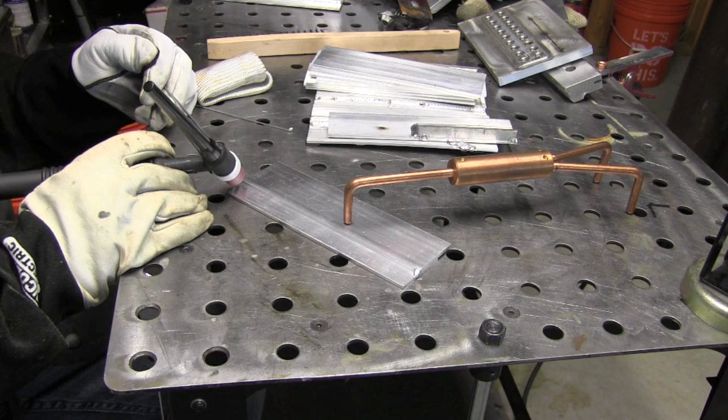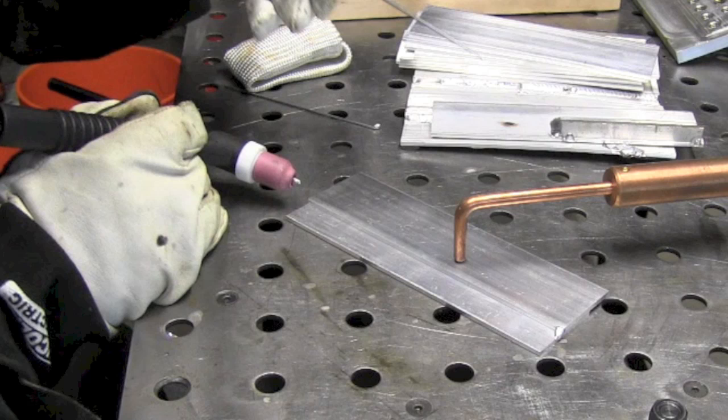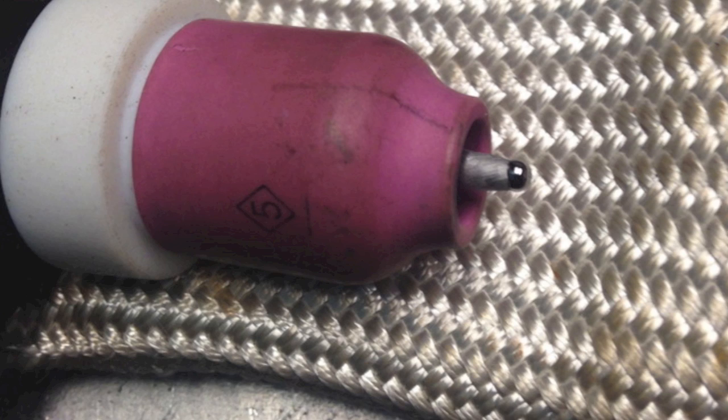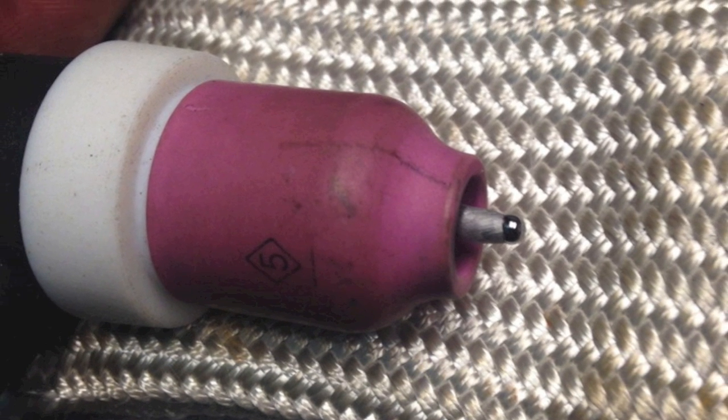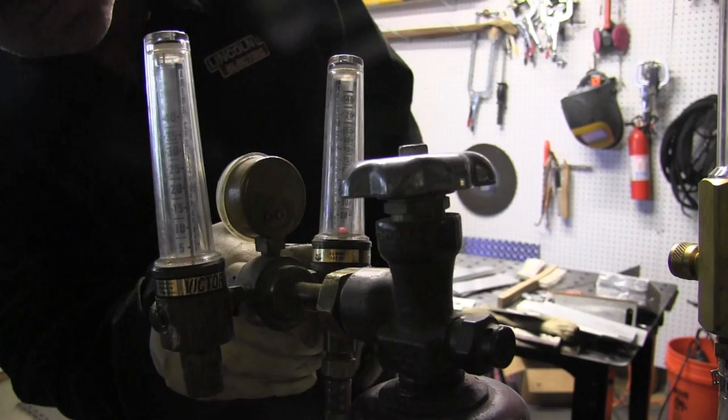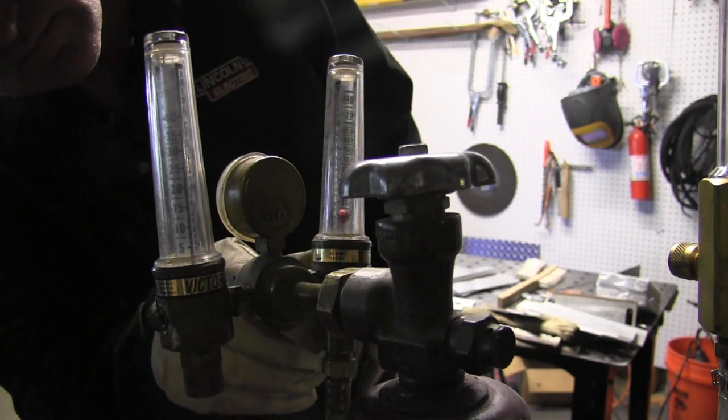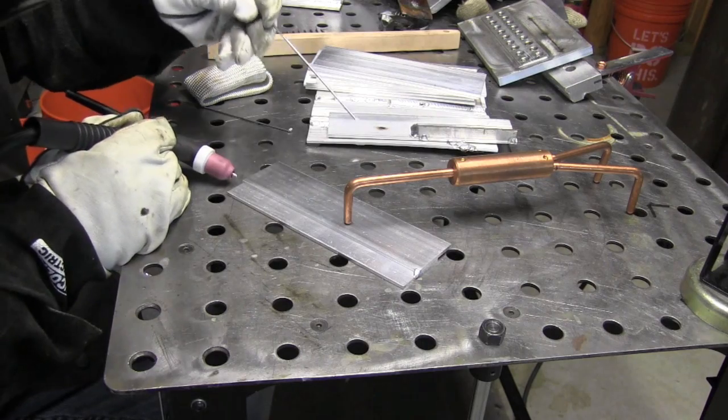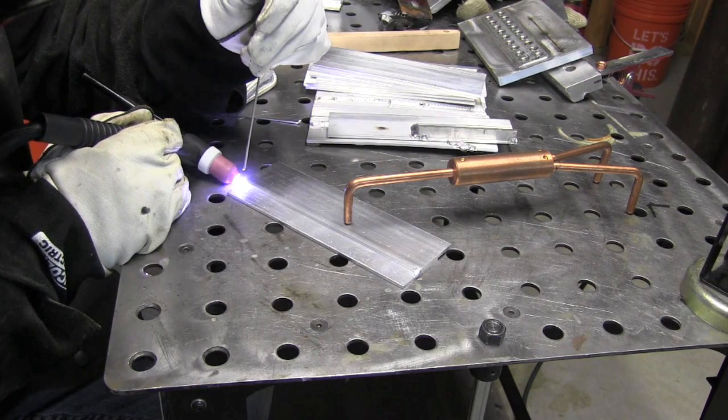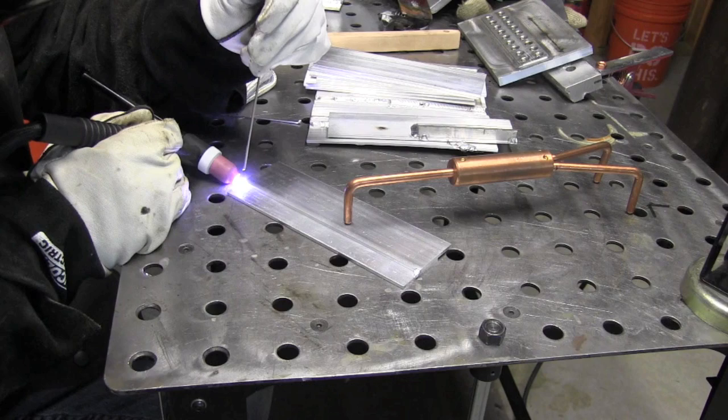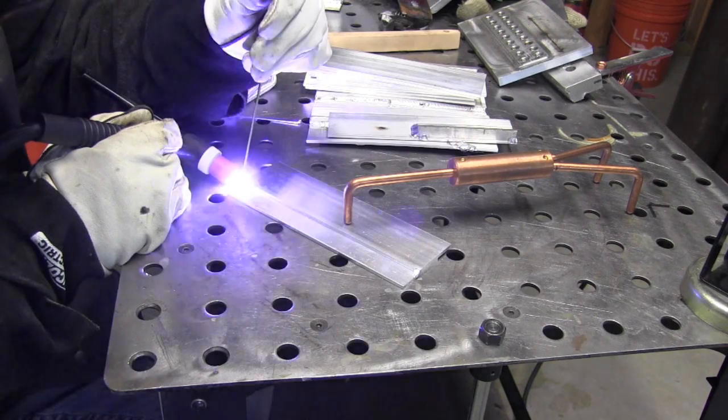Instead of coming in at this kind of an angle, that does work but sometimes it pulls air in and contaminates the tack. You can see it happen right away, it doesn't puddle cleanly. I found it helps to come in at that kind of an angle. I'm using a number five gas lens setup here with only 10 CFH pure argon and coming in from this angle, just have to hold the torch a little bit differently. Generally works better for me on the edge.